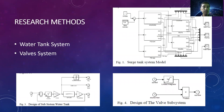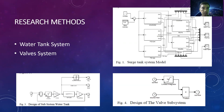Next, the research method. There are two models that we use in the system. The first is the water tank system model, and there are three comparison models: the uncontrolled system, PID conventional, and PID with Firefly Algorithm. The second model is the valve system. We can see the models in the picture on the slide.